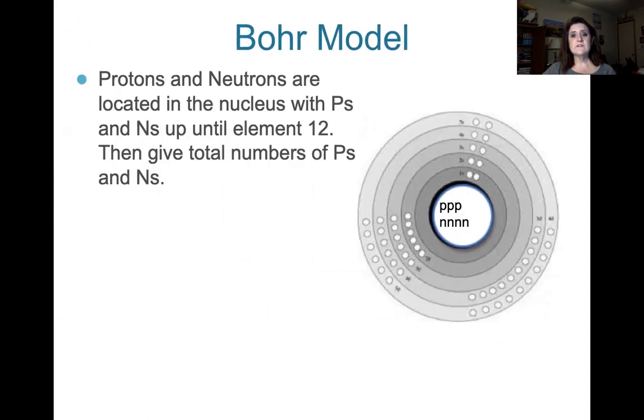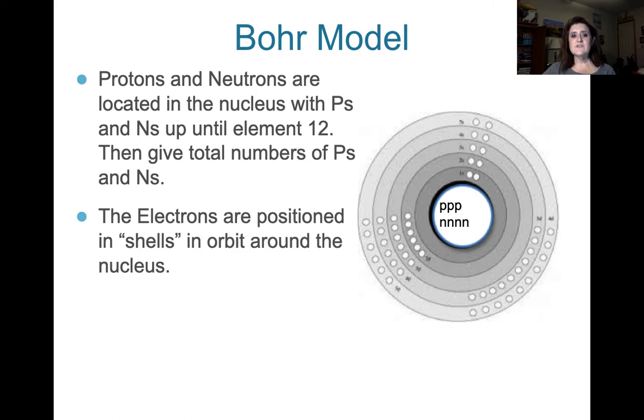The Bohr model looks like this. And the protons and neutrons are located in the nucleus. And we'll put numbers there instead of Ps and Ns. We'll put P is this number and N is this number. Then the electrons are positioned in shells around the nucleus. So each shell is filled in based on the electron configuration. So when we said we had 1s2, that meant two electrons on shell 1, two electrons on shell 2, and so forth.